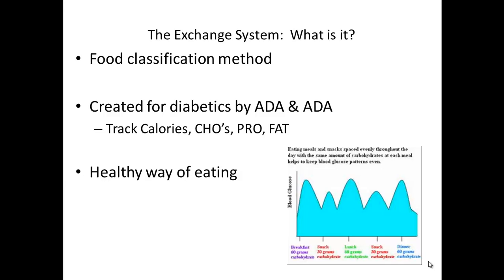The exchange system was originally developed by the American Dietetic Association and the American Diabetic Association to assure that macronutrient distribution was evenly provided throughout the day. This prevents dramatic increases and decreases in blood sugar. Diabetics use the system to control carbohydrate intake at meals and snacks, then take a set dose of insulin to cover the amount of carbs consumed. People seeking to lose weight use the exchange system to follow a calorie-control diet that still allows for a variety of foods, because foods can be exchanged within lists while maintaining the same amount of calories.